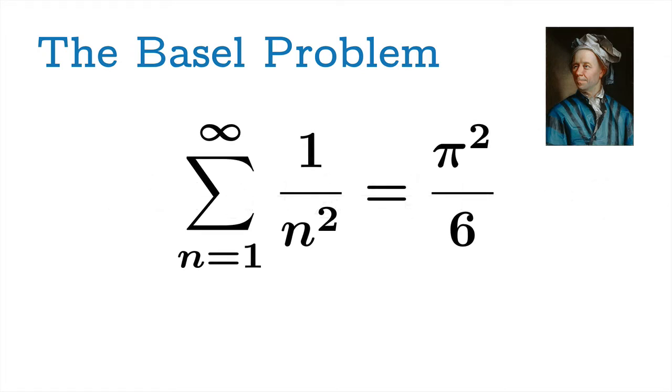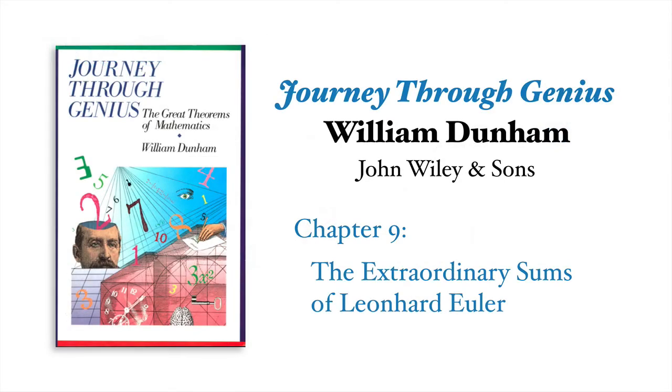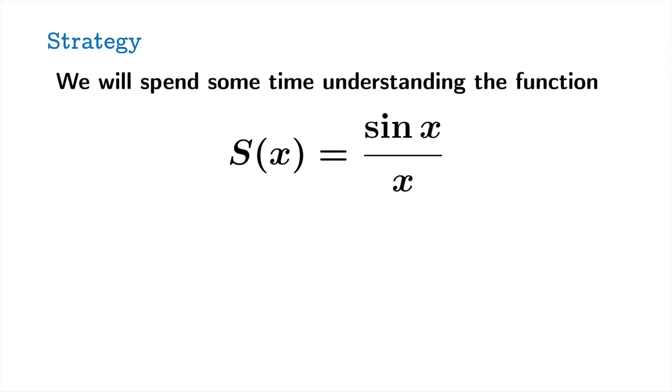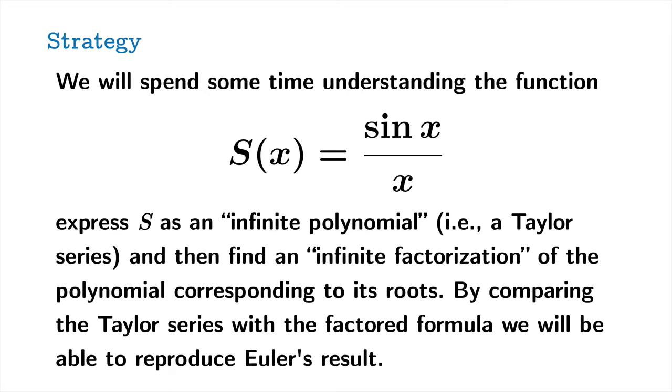So, I'd like to take you through Euler's argument, and a wonderful resource for this, is a book called Journey Through Genius by William Dunham. Look up chapter nine, The Extraordinary Sums of Leonard Euler. And it's a wonderful exposition and a wonderful book that has many other great theorems as well. So, here's the strategy we're going to use. We will spend some time understanding the function sine x over x. We're going to express s as an infinite polynomial, that is, a Taylor series. And then we're going to find an infinite factorization of the polynomial corresponding to its roots. And then by comparing the Taylor series with this factored formula, we're going to be able to reproduce Euler's result.